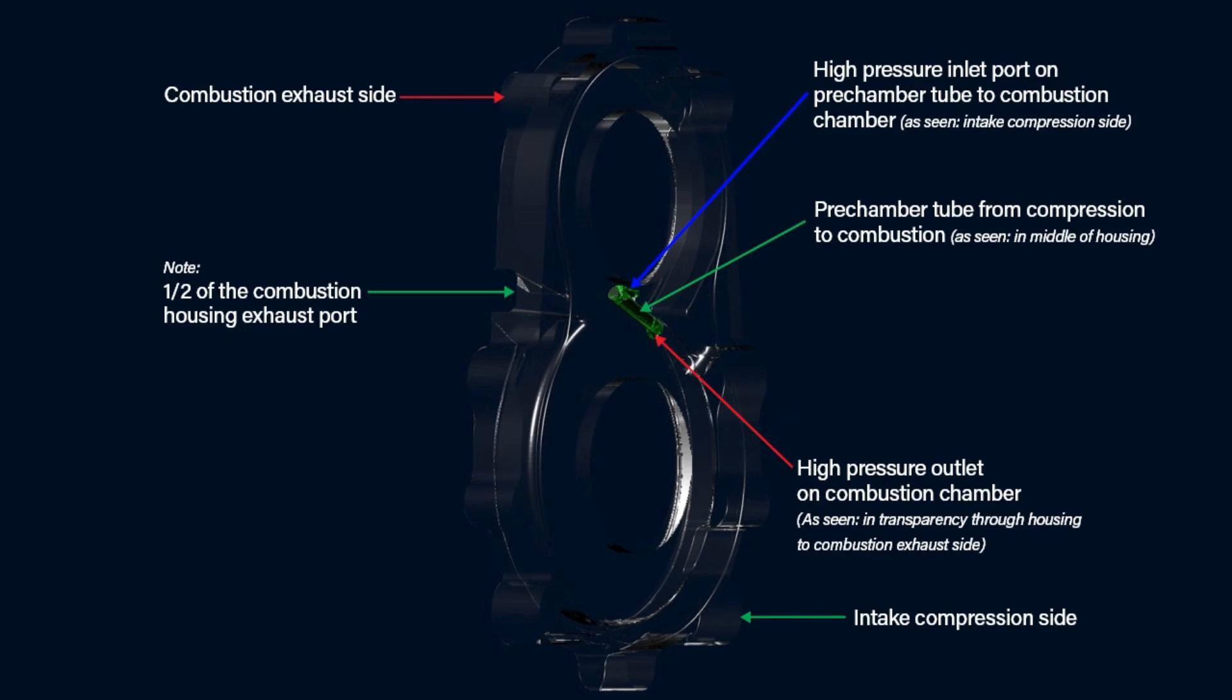Next, the pre-chamber tube from compression to combustion, as seen in middle of housing. Lastly, the high-pressure outlet on combustion chamber, as seen in transparency through housing to combustion exhaust side, leading to the other intake compression side.